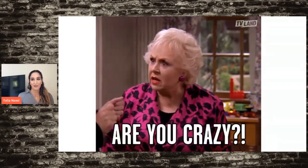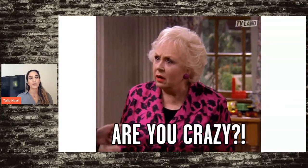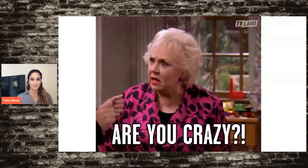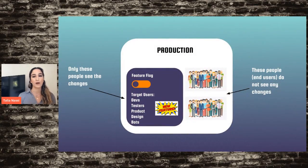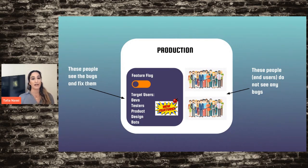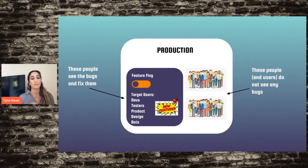Testing in production is scary and risky if you don't do it correctly and safely. Feature flags are the magic ingredient. Once your feature is written, you launch it into a feature flag and target all the members of your team. When you target users in a feature flag, only they can see the changes related to that feature — the outside world, your real end users, cannot see anything.